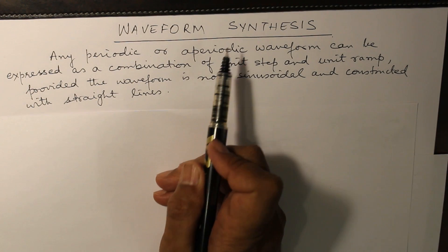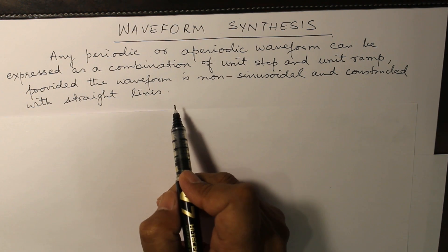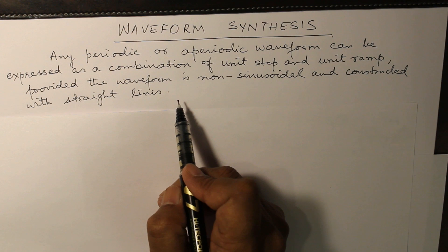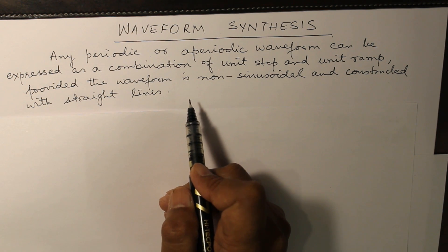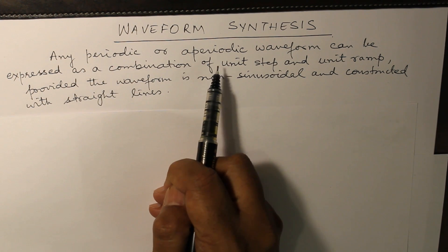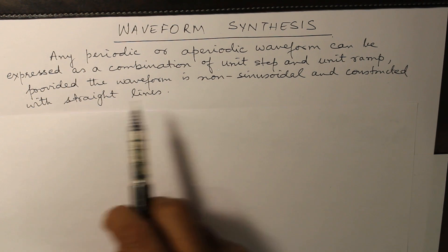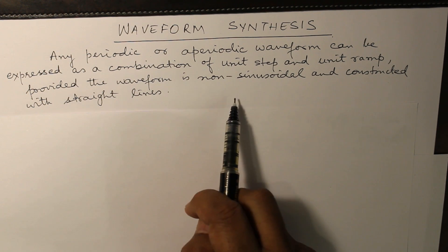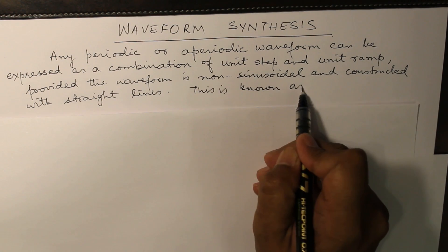Waveform synthesis is the method by which we synthesize a given waveform and express it in terms of unit step and unit ramp signals. These unit step and unit ramp signals are time displaced because the waveform changes its course at different times. Any periodic or aperiodic waveform can be expressed as a combination of unit step and unit ramp, provided the waveform is non-sinusoidal and constructed with straight lines. This is known as waveform synthesis.